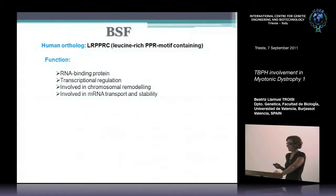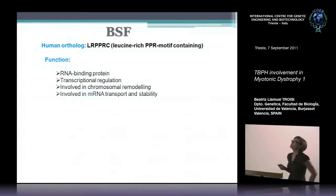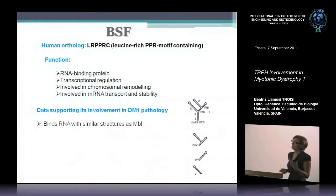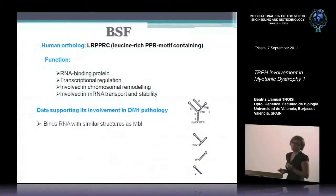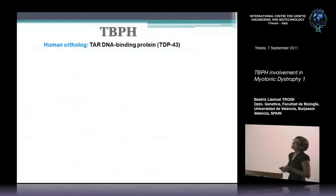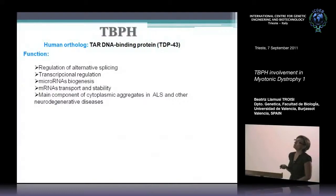To tell you more about these two proteins: BSF has a human ortholog which is a leucine-rich PPR motif-containing protein, with a main role in transcriptional regulation, chromosomal remodeling, and also mRNA transport and stability. The only data supporting its involvement in DM1 was that BSF and muscle-blind attach to similar RNA structures. About TBPH — its human ortholog is TDP43.